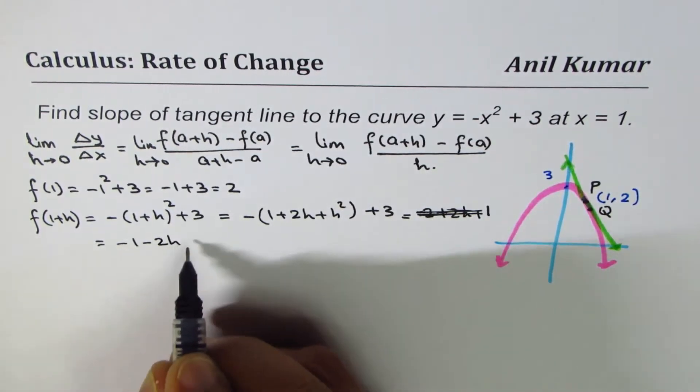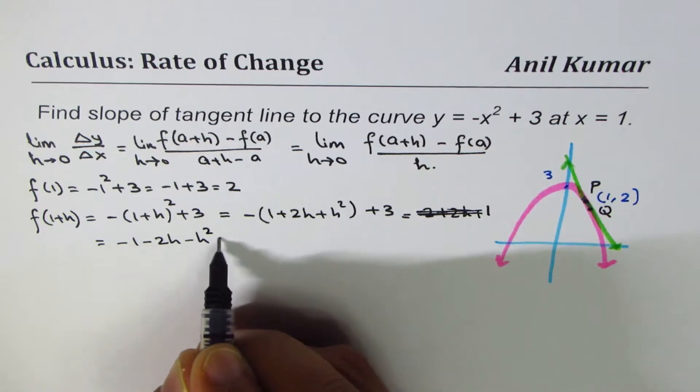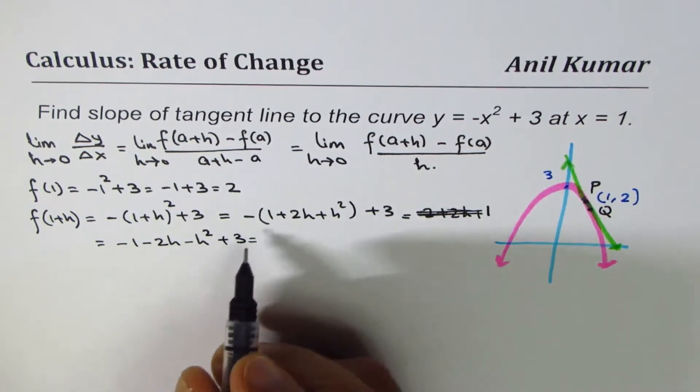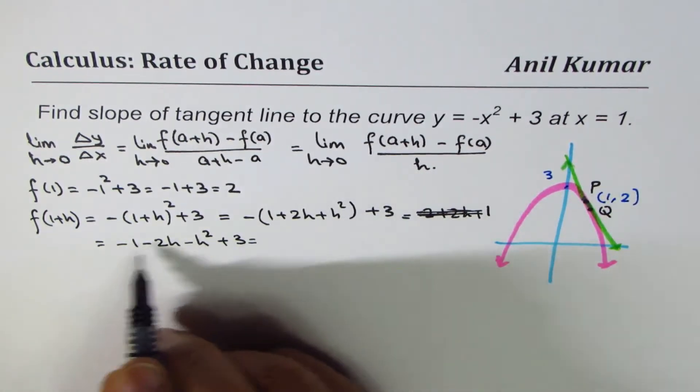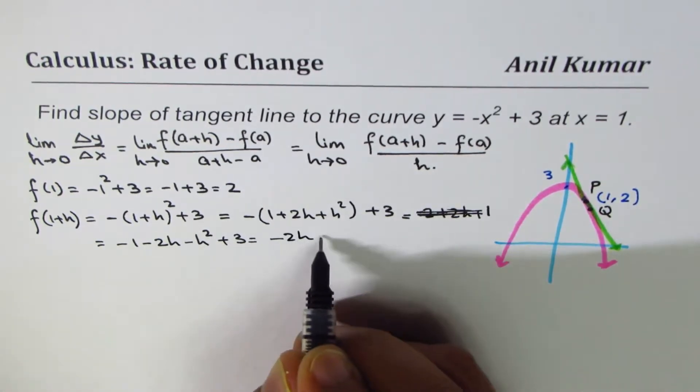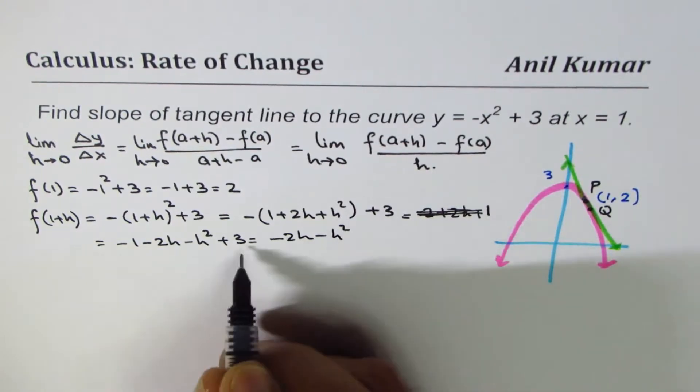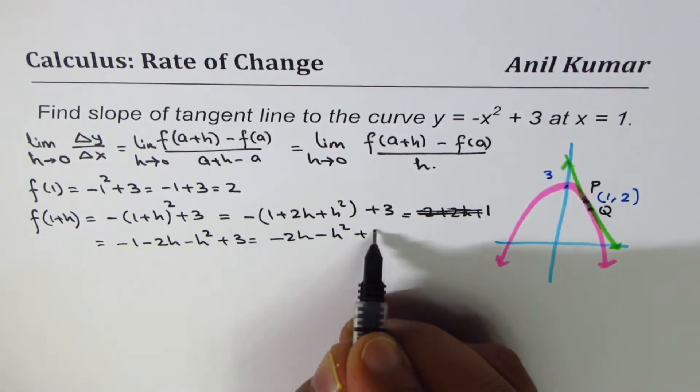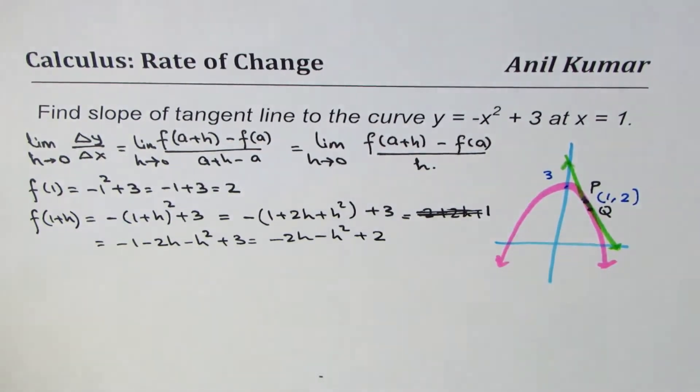-(1 + 2h + h²) + 3, and that gives us -2h - h² + 2. 3 - 1 is plus 2. Is it okay? So that gives us f(1 + h).